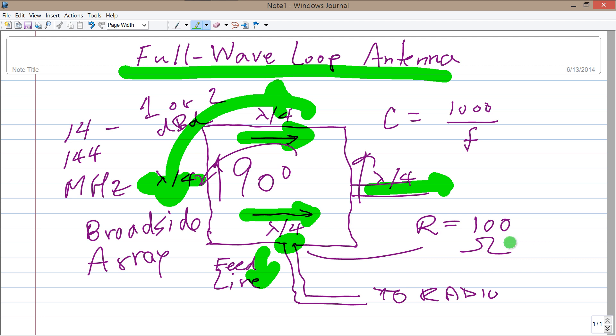You can also make parasitic arrays out of these things. You can add a director and a reflector like you would do with a Yagi. And in that case, they call the antenna a quad. In fact, if you have a two element quad with the elements spaced about a quarter of a wavelength apart, it's almost like you have a cube, and so they sometimes call it a cubical quad antenna.